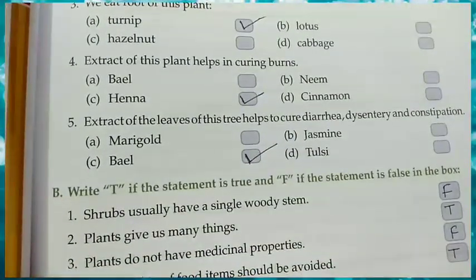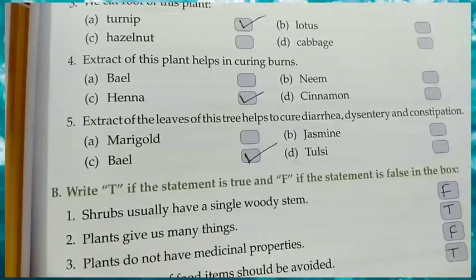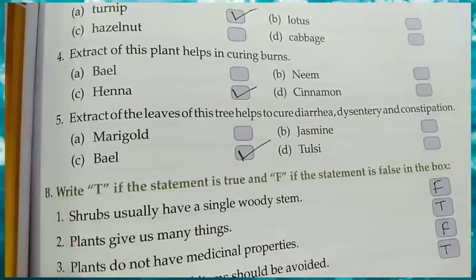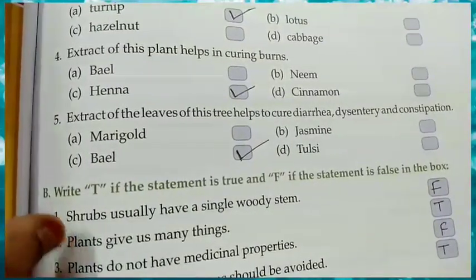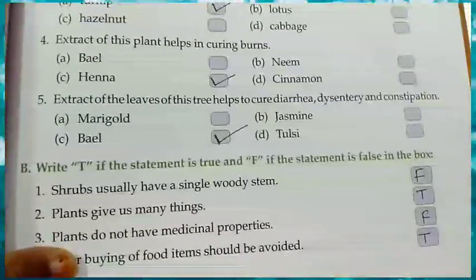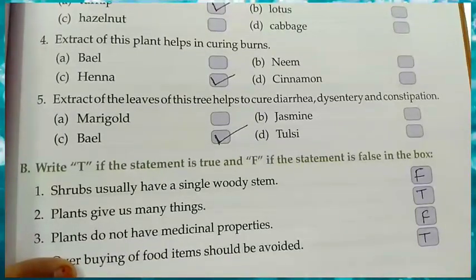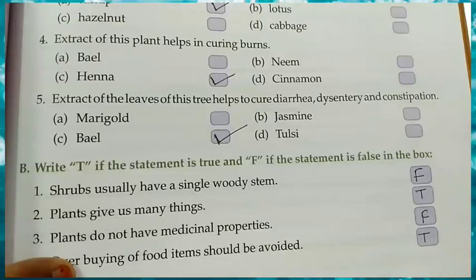Question 4: Extract of this plant helps in curing burns. The answer is Hina — if you get a burn, you apply Hina. Tick mark Hina. Question 5: Extract of leaves of this tree helps in curing diarrhea, dysentery, and constipation. The answer is Bael — B-A-E-L.